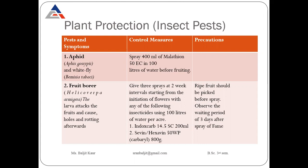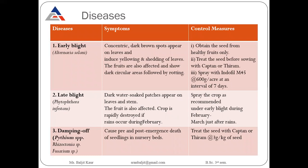The next insect is fruit borer. Fruit borer harms the fruits by causing holes in the fruits and causing rotting. The scientific name of fruit borer is Helicoverpa armigera. To control fruit borer, we can spray the field three times with chemicals like Endocarb, Sevin, or Hexavin. Once the field has been sprayed with these chemicals, we have to wait for three days before picking the fruits.